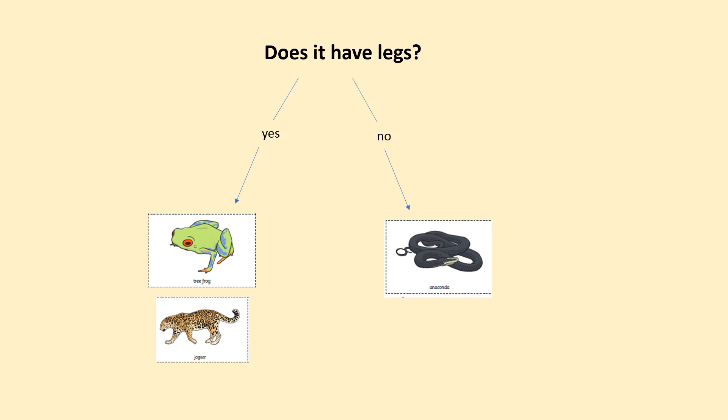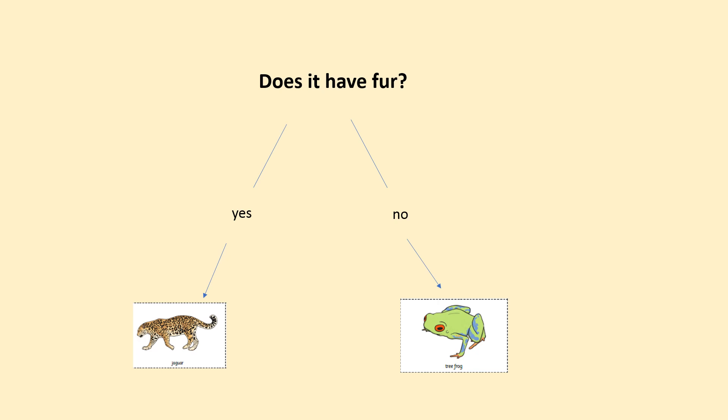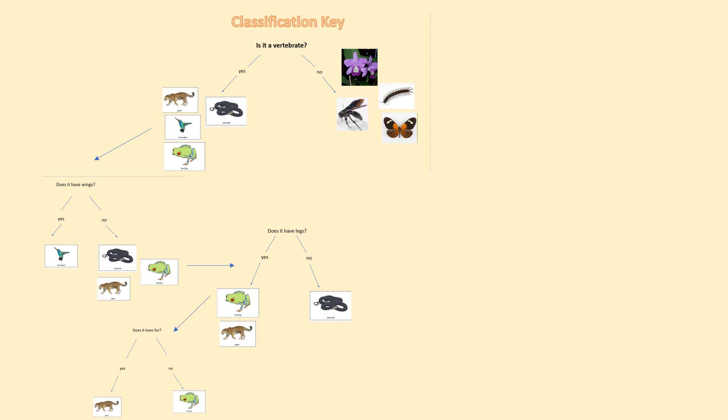With the hummingbird, that was the end of that branch. Now we have three animals and we have to ask a further question: does it have legs? Yes or no. Anaconda — that's the end of this branch. Now we go through tree frog and jaguar and ask another question. You can use a classification table to help you with those questions. Does it have fur? Yes and no — and that is the end of this section.